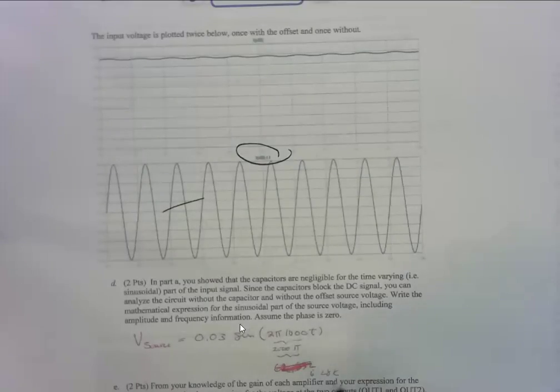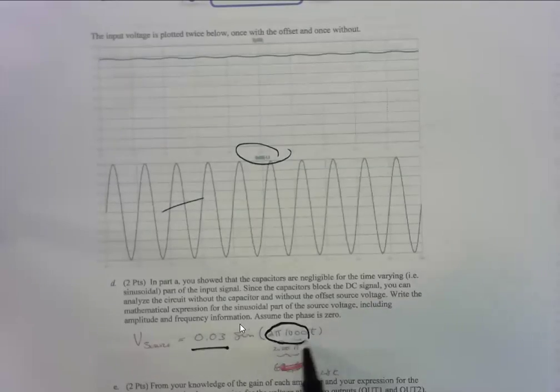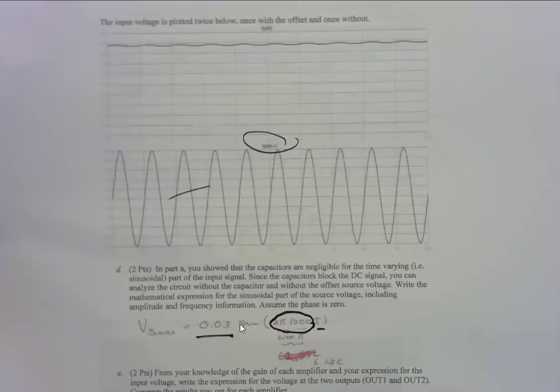Then the question in part D is, what is the mathematical expression, assuming there's no phase, because we don't care about that, for the voltage of the source? It's 0.03, which is the amplitude, the sine of omega, which is right here, times T. Omega is just 2 pi times 1000 or 2000 pi. You can write it as 2000 pi or as 6.28k.